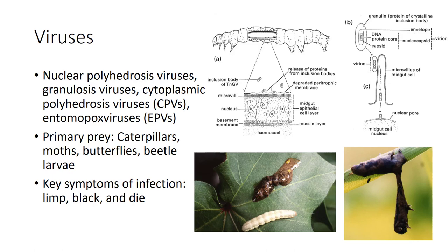Baculoviruses have DNA genomes and are found mostly in endopterygote hosts such as moth and beetle larvae, which become infected when they ingest the inclusion bodies with their food. Inclusion bodies dissolve in the high pH of the insect midgut and release the virions, which infect the gut epithelial cells and usually spread to other tissues, particularly the fat body. This causes the larvae to become limp, black, and die. For certain pests, viral insecticides provide feasible alternatives to chemical controls, but several factors may restrict the usefulness of different viruses, such as the cost to produce the virus since a host is needed, as well as inactivation by ultraviolet light.